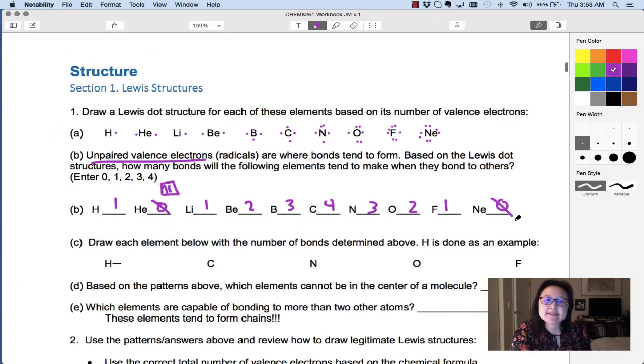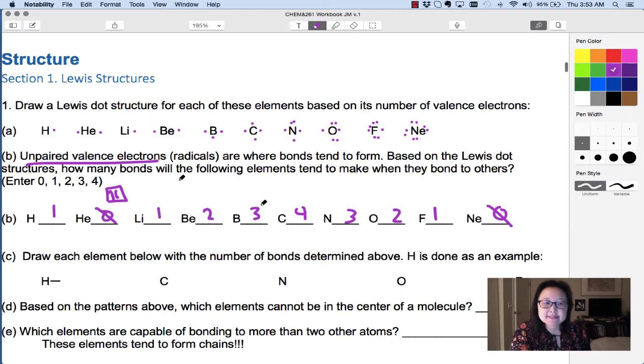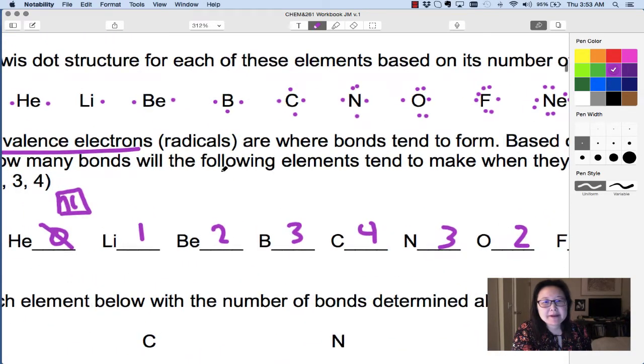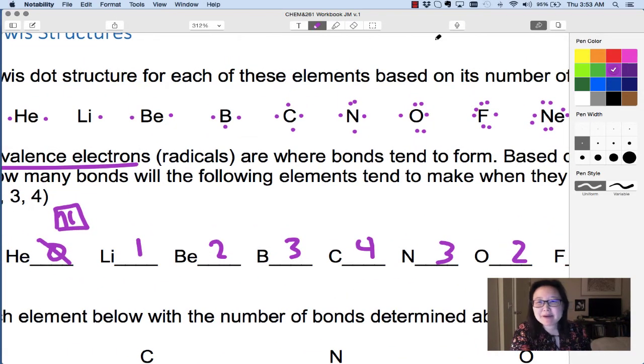So notice that our noble gases, helium and neon, have no unpaired electrons.